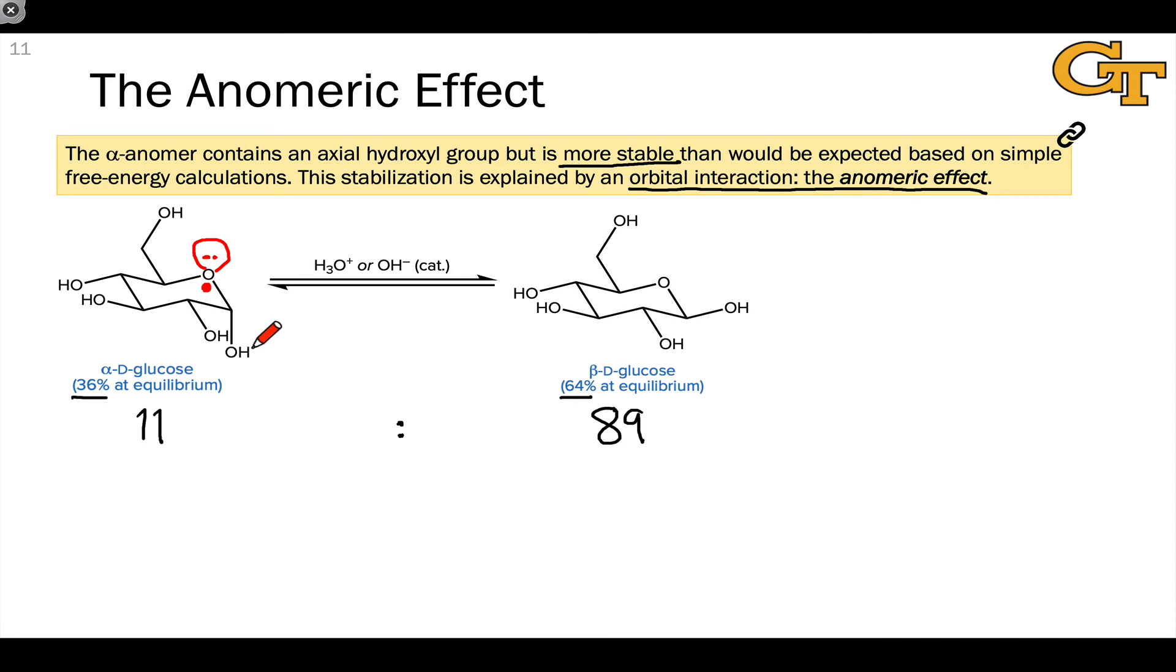If we draw the hybrid orbital that contains that lone pair, it might look something like this. The lobe on carbon looks something like this, and the lobe on oxygen is somewhat smaller.